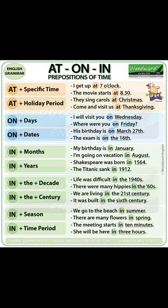When do we use 'on'? We use 'on' for specific days. For example: I have a doctor's appointment on Monday. She always goes grocery shopping on Wednesday. We had a huge holiday family dinner on Christmas Eve. We also use 'on' when talking about dates. For instance: my brother celebrates his birthday on May 20th. We always visit my grandparents on December 25th.